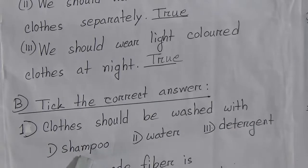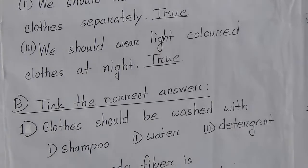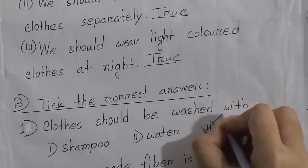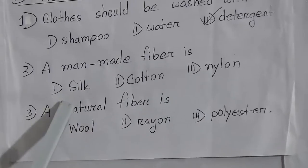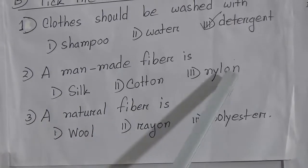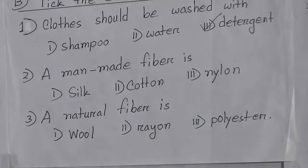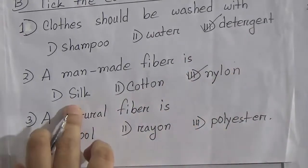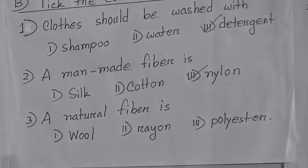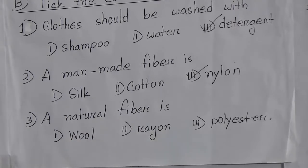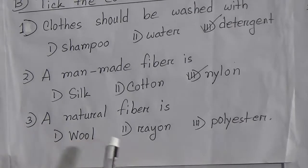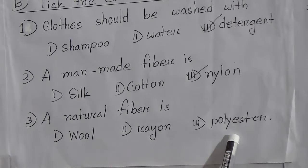Now exercise B: Tick the correct answer. Number one: Clothes should be washed with — options are shampoo, water, or detergent. The answer is detergent, so we put a tick there. Number two: A manmade fiber is — options are silk, cotton, or nylon. The answer is nylon, because we know cotton and silk are natural fibers.